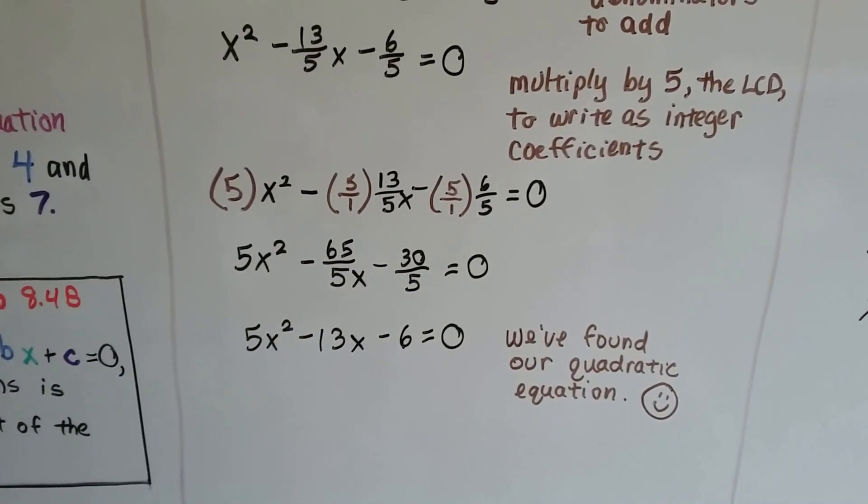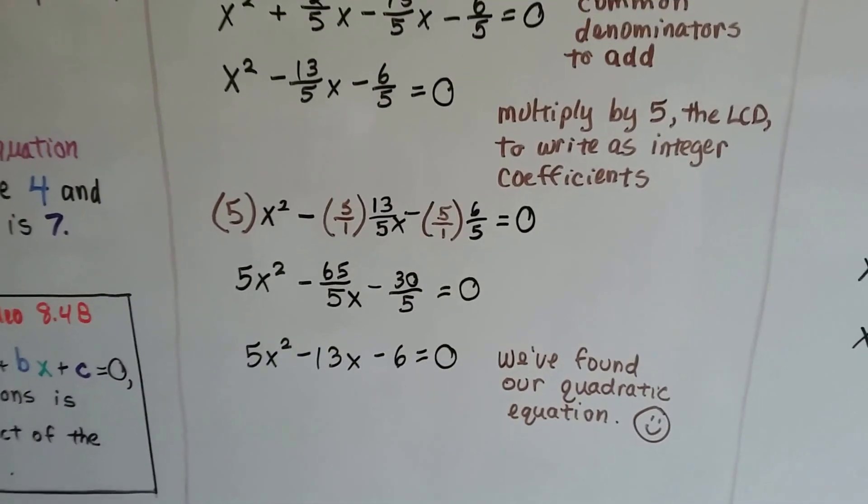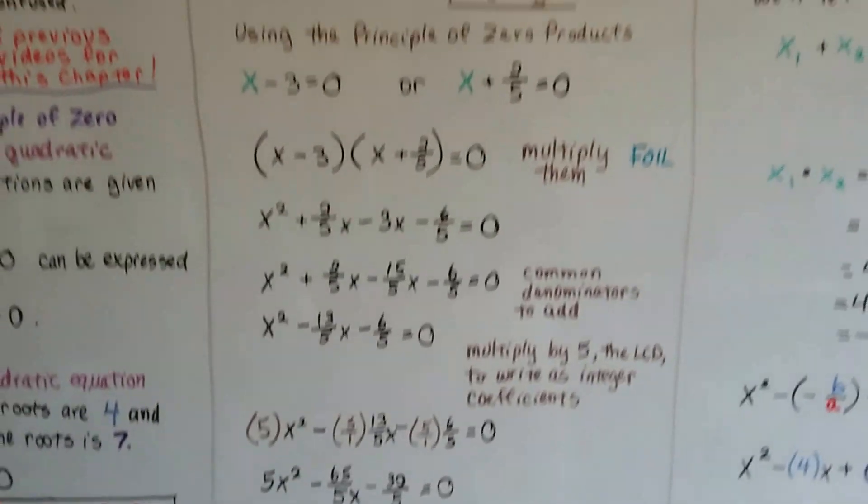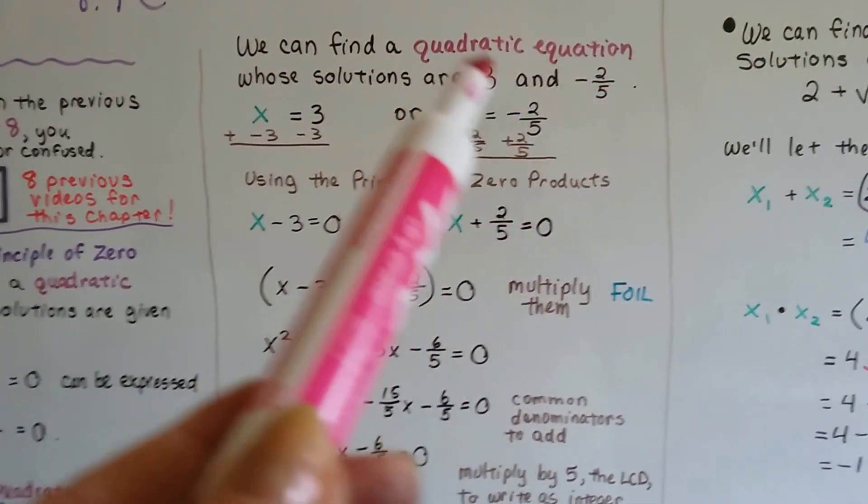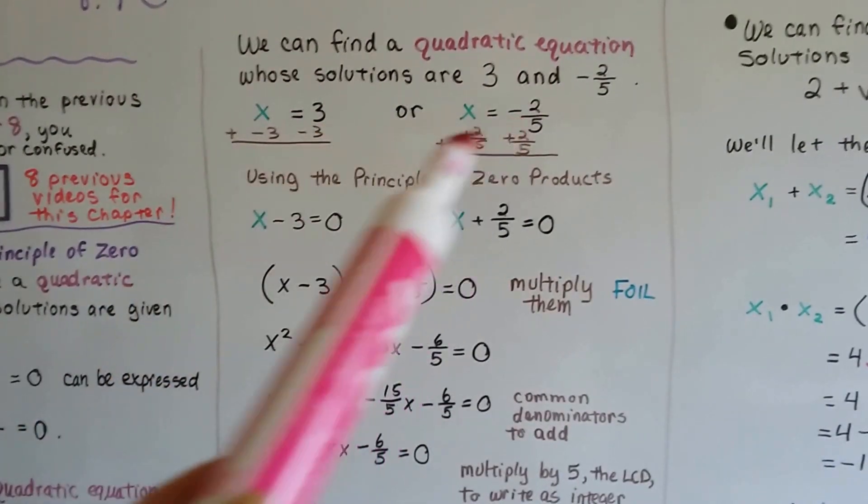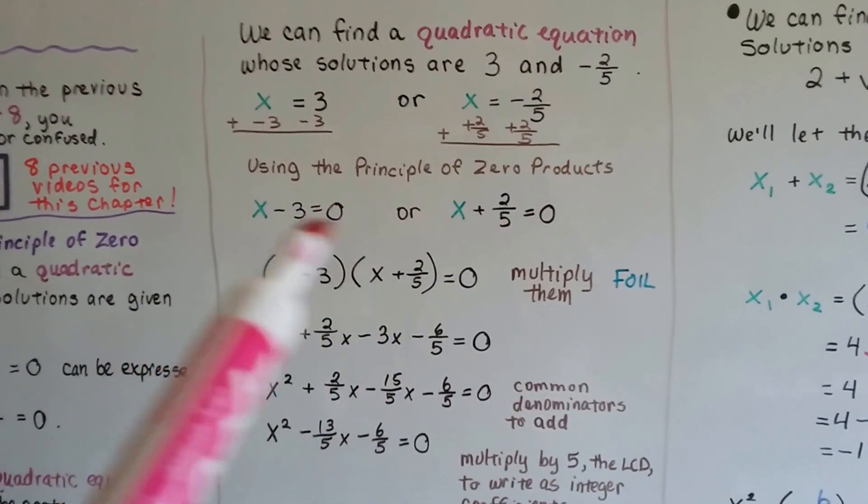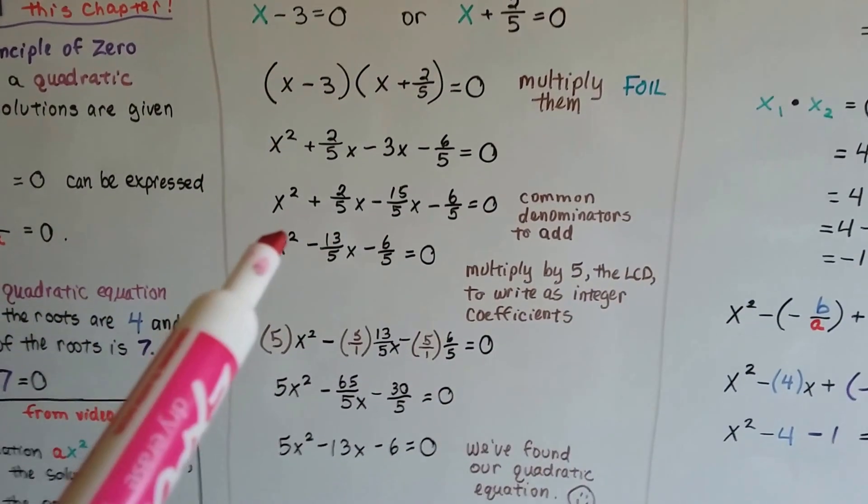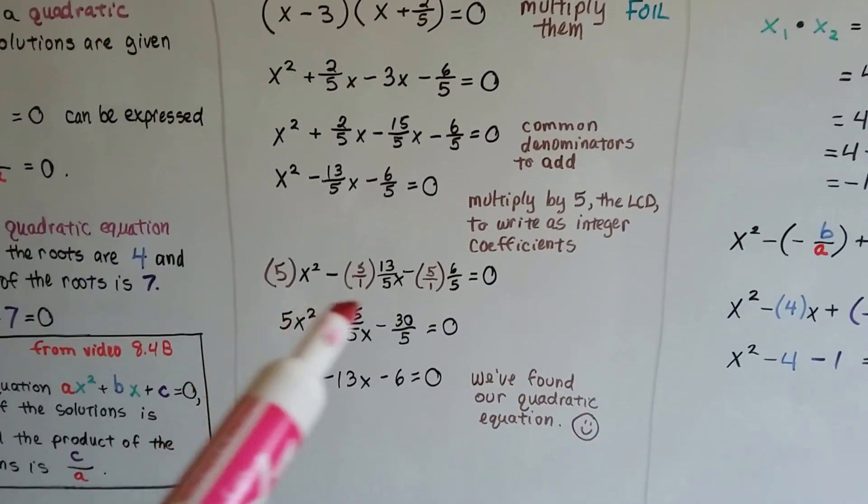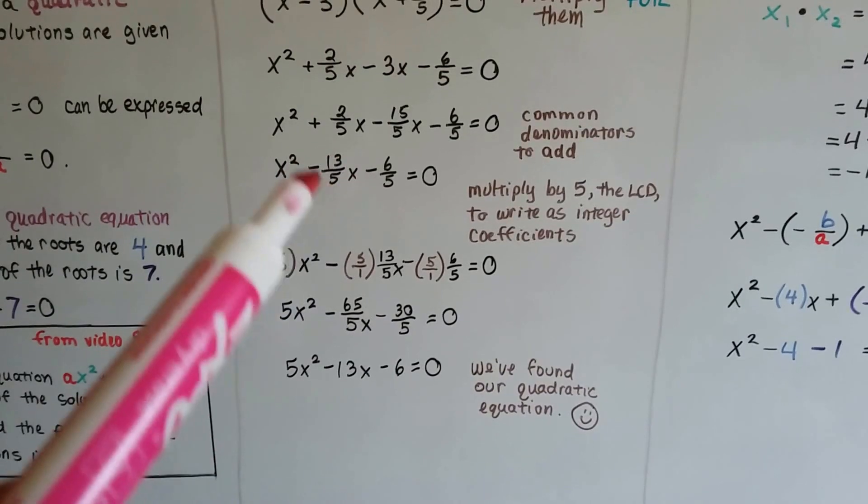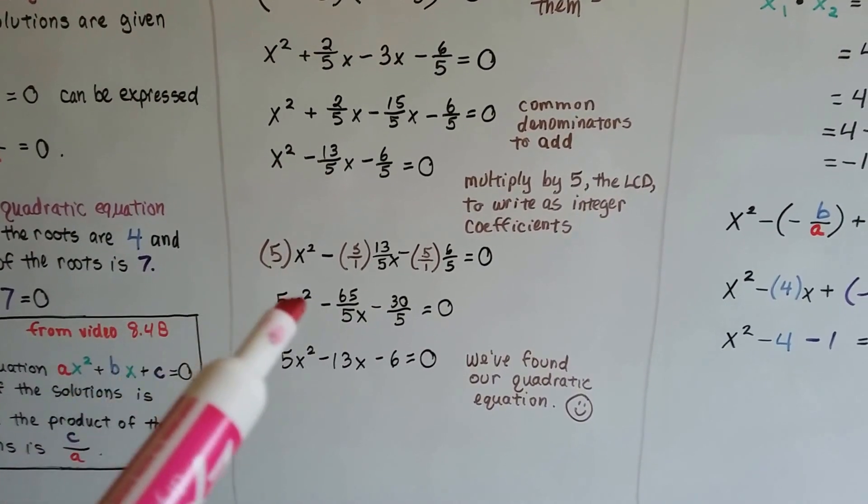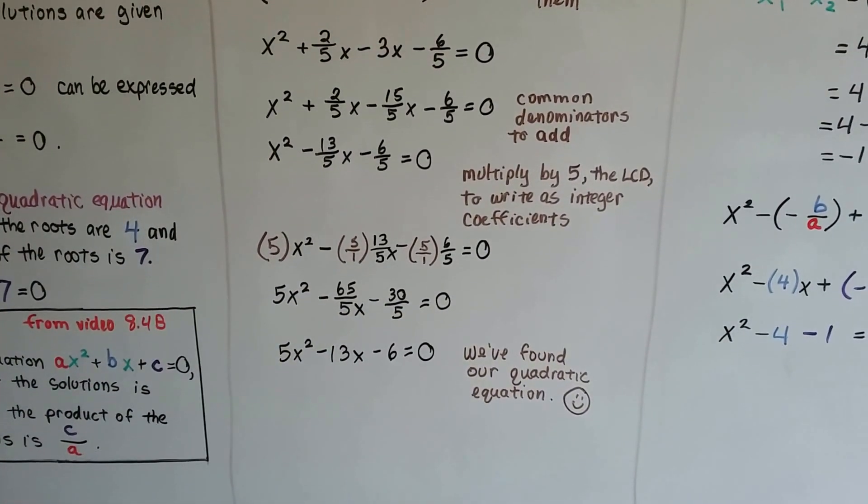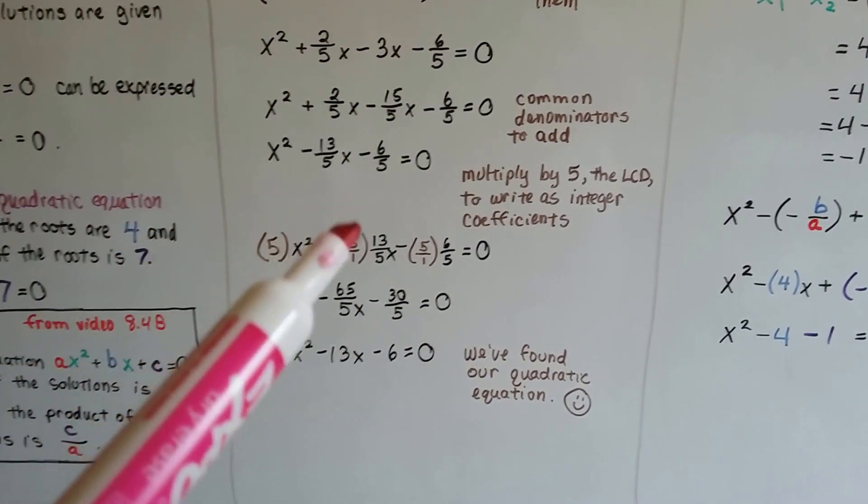And we found our quadratic equation. So what we did was we had our two values, set them so they equaled x, then used the principle of zero products, foiled them, simplified, and converted the rational terms into integer coefficients by finding the least common denominator and multiplying every single term.